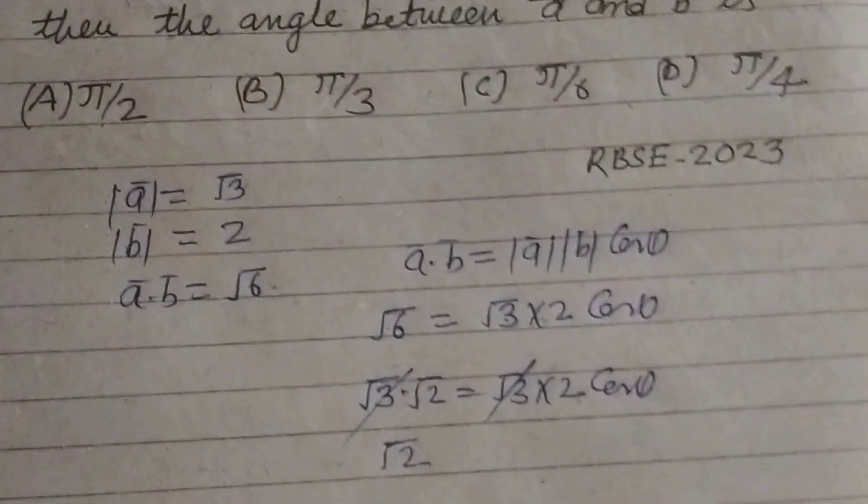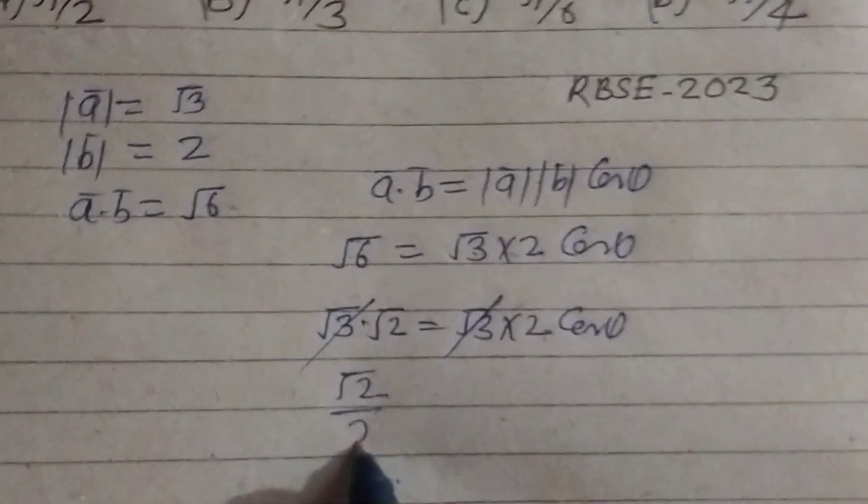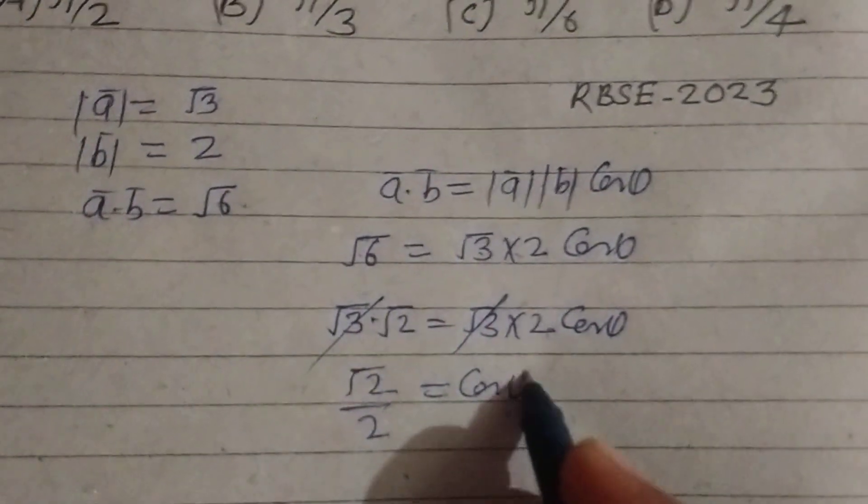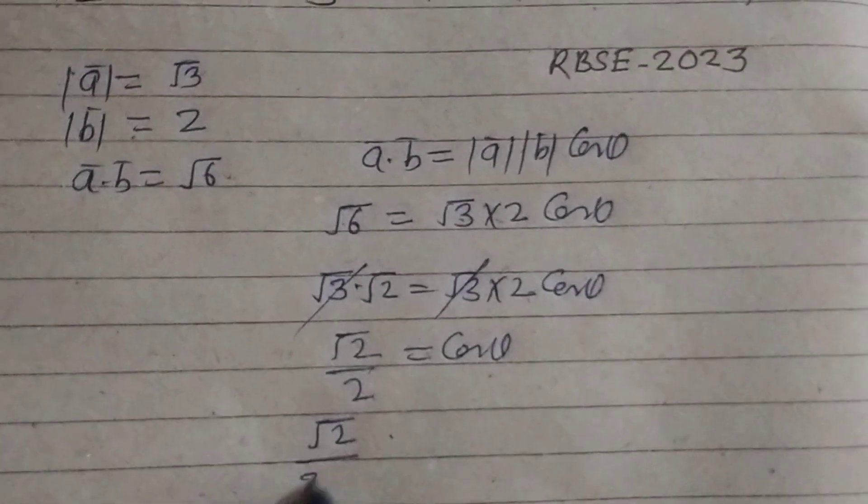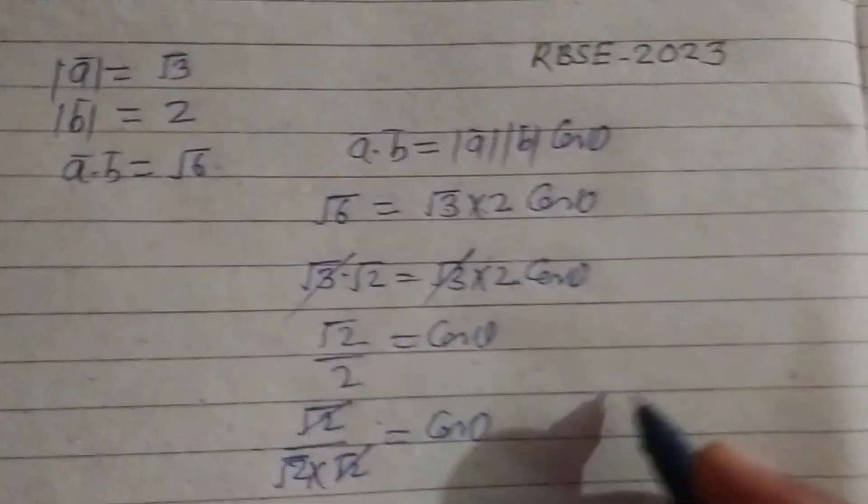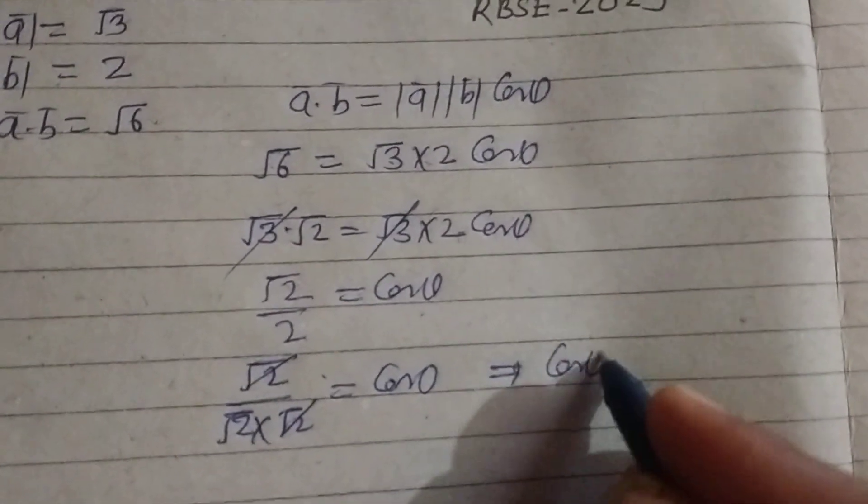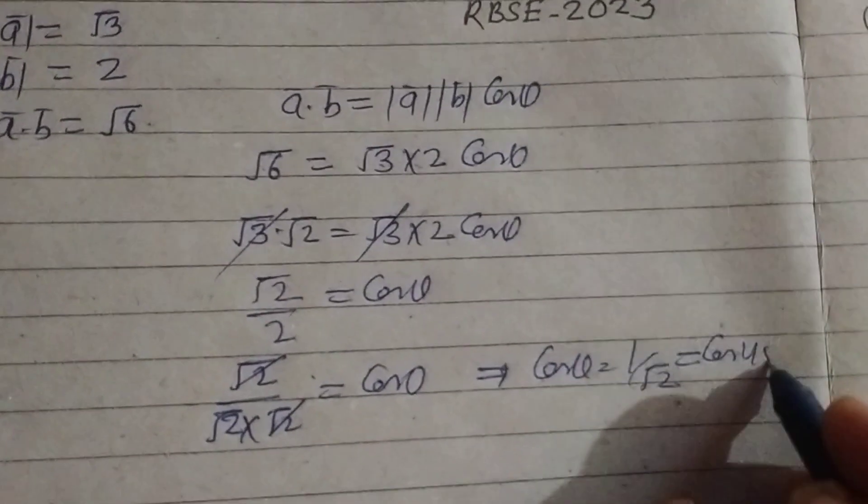So √2, 2 upon 2 equal to cos theta and you know that √2 by 2 can be written as √2 into √2 cos theta, so this is divided by.